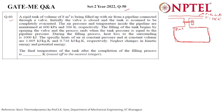Filling begins and the process ends when the pressure inside equals the pipeline pressure. During the filling process, heat loss to the surroundings is 1000 kJ. The specific heat of air is given, and we have to find the final temperature of the tank at the end of the process.